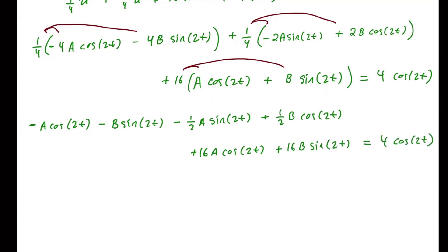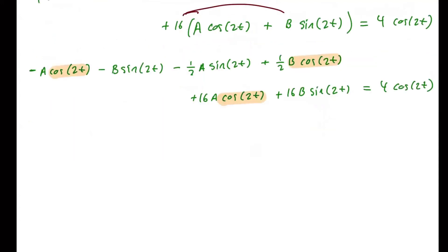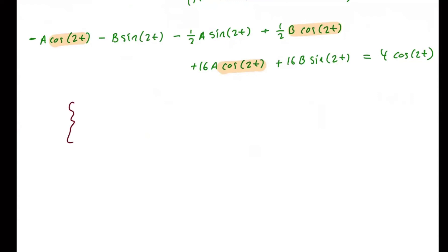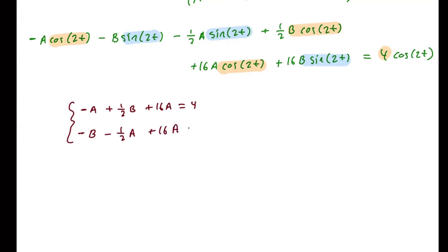Now we equate coefficients. Collecting cosine 2t terms and setting them equal to the right-hand side: negative A plus one-half B plus 16A equals 4. Collecting sine 2t terms, which have no counterpart on the right-hand side, and setting them equal to zero: negative B minus one-half A plus 16B equals zero.